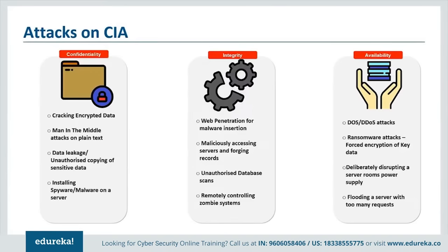Last but not least is availability — best ensured by rigorous maintaining of all hardware, performing hardware repairs immediately when needed, and maintaining a correctly functional operating system environment free of software conflicts. It's also important to keep current with all necessary system upgrades, provide adequate communication bandwidth, and prevent bottlenecks. Redundancy, failover, and high availability clusters can mitigate serious consequences when hardware issues occur. Fast and adaptive disaster recovery is essential. Safeguards against data loss must include unpredictable events such as natural disasters and fire, with backup copies stored in a geographically isolated location.